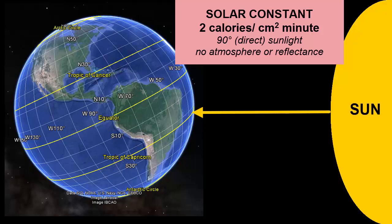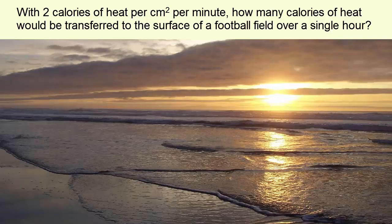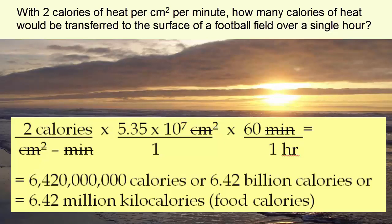The solar constant describes the maximum amount of the sun's radiation that could be absorbed by Earth's surface if there were no atmosphere to remove it en route, and if that radiation was directed straight down on the surface at a 90 degree angle. The solar constant is 2 calories of heat per square centimeter per minute. To illustrate how much heat that is — assuming no atmosphere and rays hitting at a 90 degree angle — how much heat would be transferred to the surface of a football field in a single hour? We take 2 calories per square centimeter per minute, multiply by the area of the football field in square centimeters, then multiply by the number of minutes in one hour.